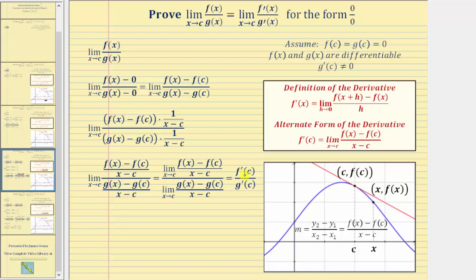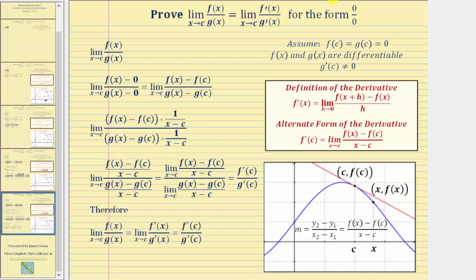And now we have what we need, because notice how we started with the limit as x approaches c of f(x) divided by g(x), and we showed this is equal to f′(c) divided by g′(c), where we find f′(c) by evaluating f′(x) at x equals c and g′(c) by evaluating g′(x) at x equals c. We've shown the limit as x approaches c of f(x) divided by g(x) equals the limit as x approaches c of f′(x) divided by g′(x), which via direct substitution equals f′(c) divided by g′(c). Again, this is not a complete proof of L'Hôpital's rule, but it should help justify it when we have the indeterminate form of zero divided by zero.